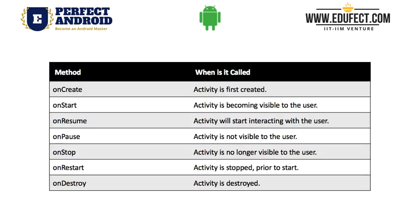Let us look at those events or methods and when they are called. The first time an activity gets created, we get the onCreate event. Then when the activity is starting to get visible to the user, we get onStart.